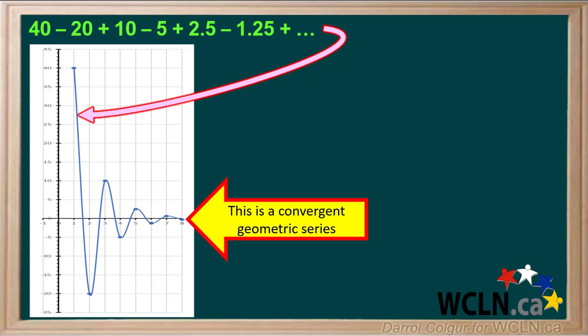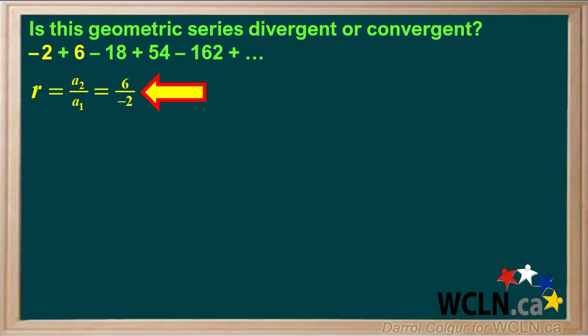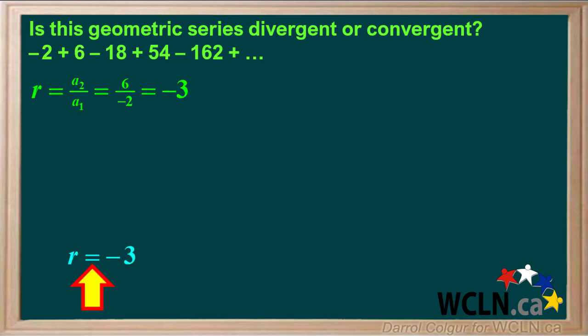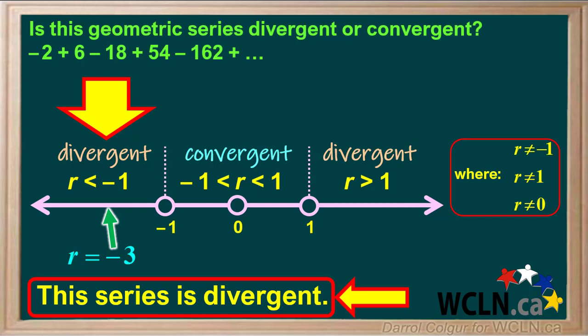Let's do another example. We're asked if this geometric series is divergent or convergent. We'll calculate R, which is A2 over A1, or 6 over negative 2, which is negative 3. Now we know that R equals negative 3; we can see where it fits in our diagram. Negative 3 is less than negative 1, and this is one of the divergent ranges. So we can state that this series is divergent.